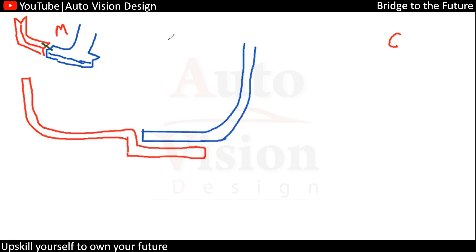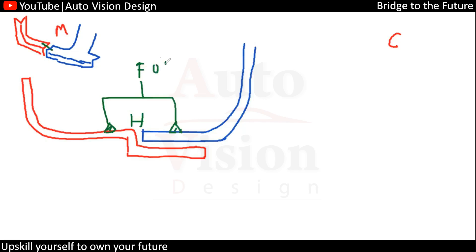Now you can check what the conditions are. There will be a gap condition — the gap value is important — as well as a flush condition. The flush value is essentially zero, plus or minus some tolerance. The tolerance value comes from the stack-up.